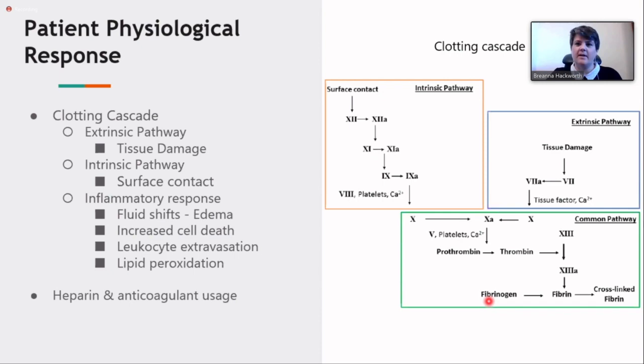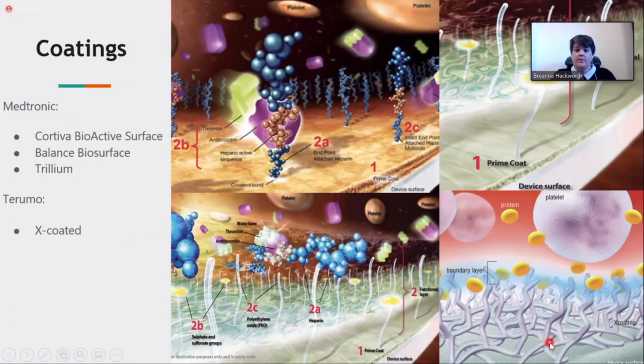The coatings that we looked at—we looked at four different ones, three by Medtronic and one by Terumo. In the upper left-hand corner, we have Cortiva bioactive surface. This is a heparin-coated surface, and it alternates anionic and cationic polymers, providing that thromboresistance. Next to that, in the upper right-hand corner, is balanced biosurface. This is a non-heparin coating surface that uses hydrophilic polymers.